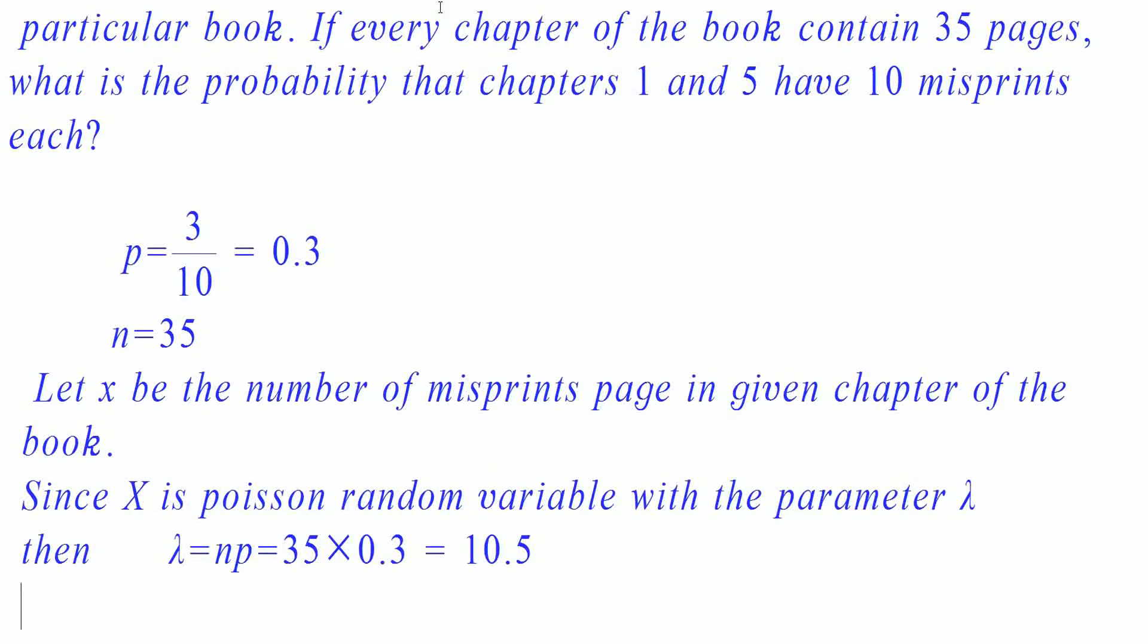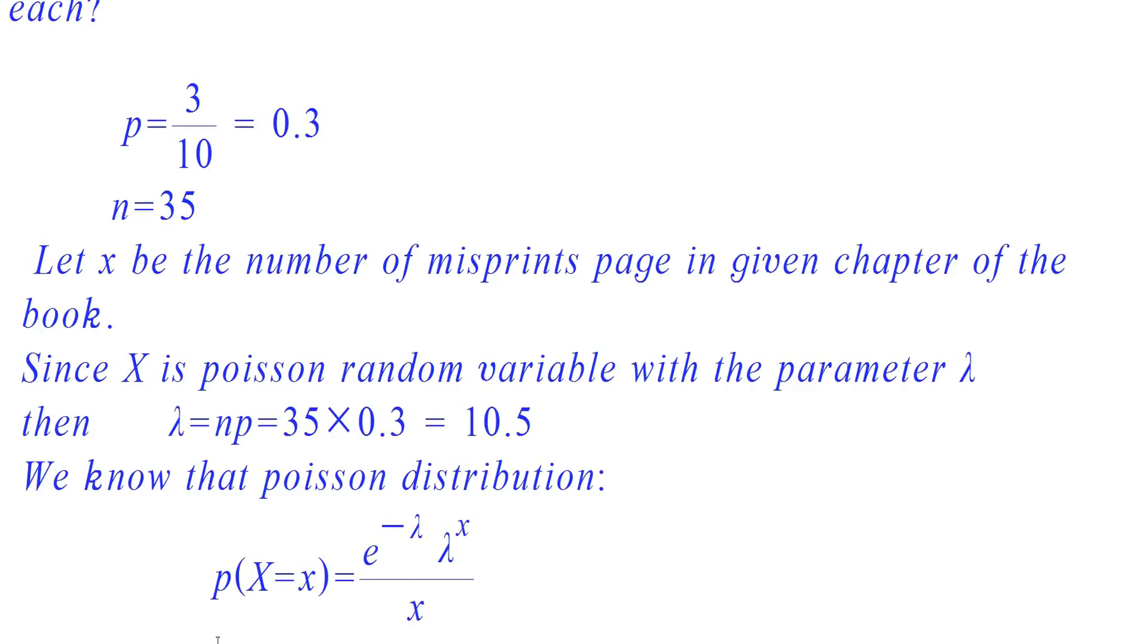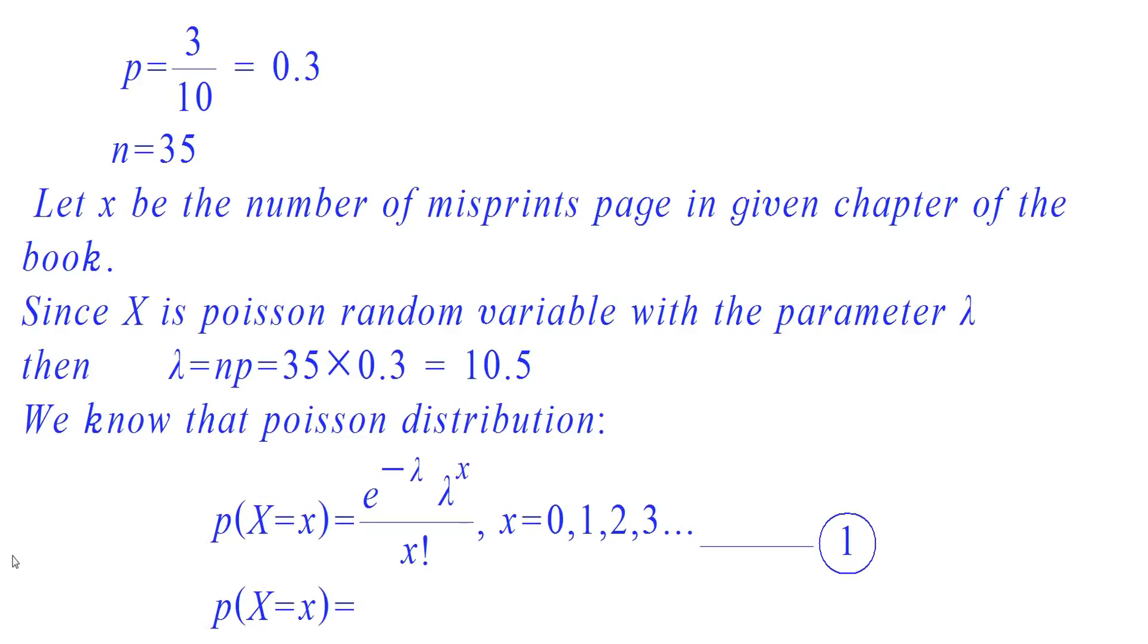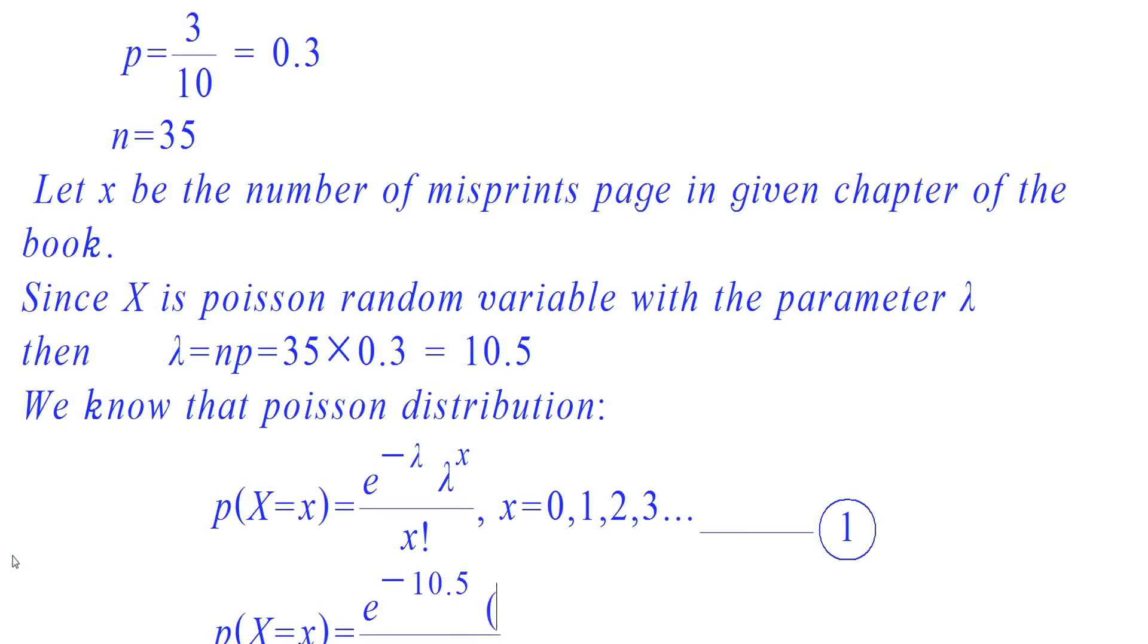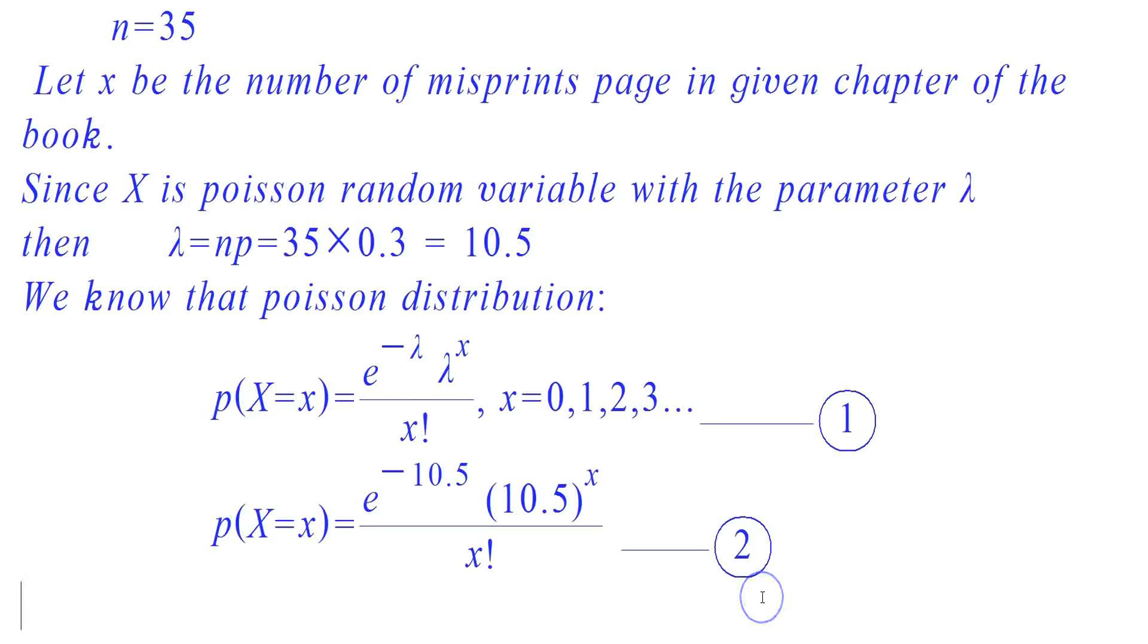We know that the Poisson distribution is e raised to minus lambda into lambda raised to X by X factorial. Substitute lambda is equal to 10.5 in equation 1. Then e raised to minus lambda into lambda raised to X by X factorial becomes e raised to minus 10.5 into 10.5 whole raised to X by X factorial.